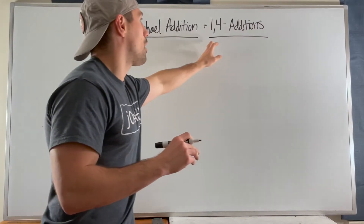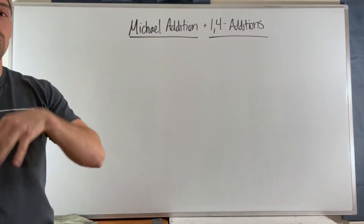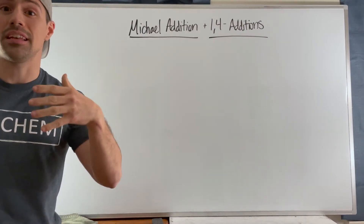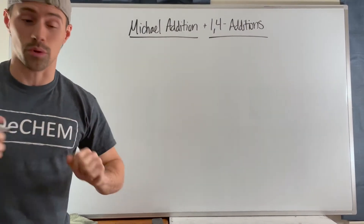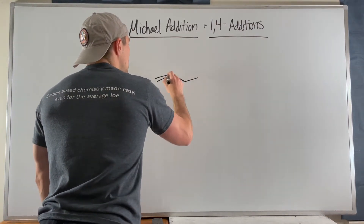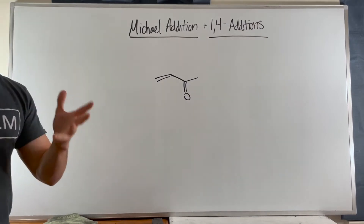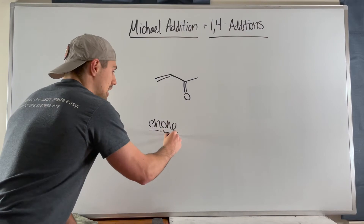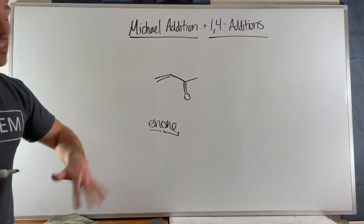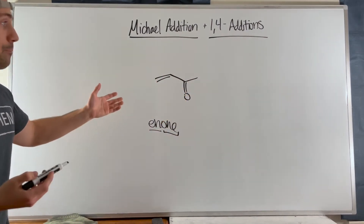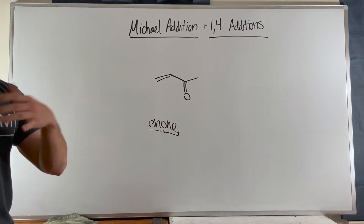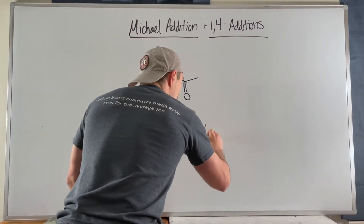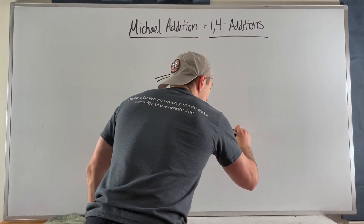More generically, this video will touch on what are called 1,4-additions. If you recall the aldol condensations, at the end of those we created a new functional group you can call an enone — because there's an alkene and a ketone or aldehyde present. If you want to be generic, you can call it an alpha-beta unsaturated carbonyl.